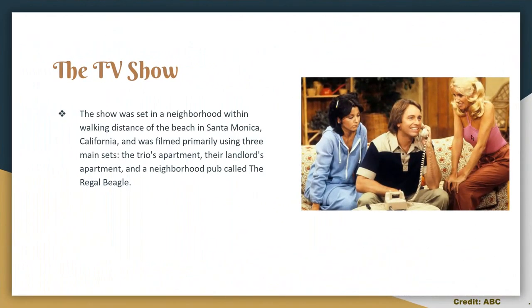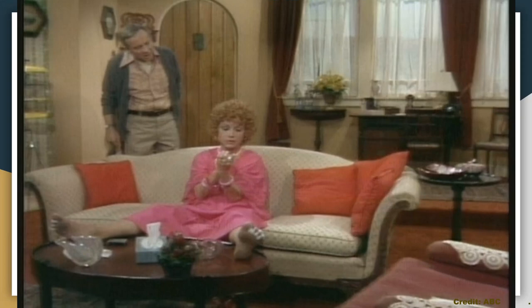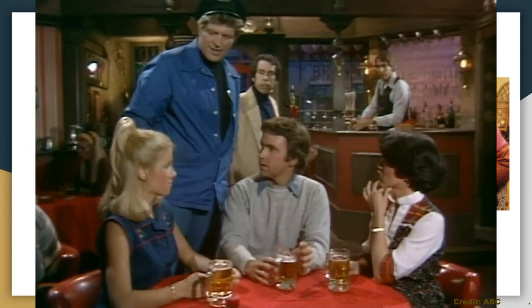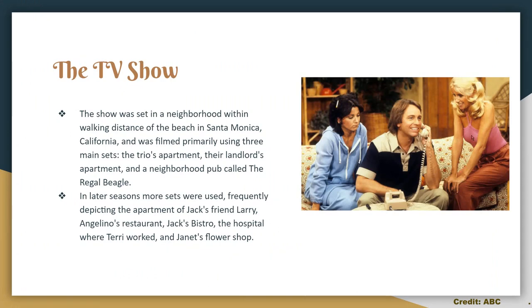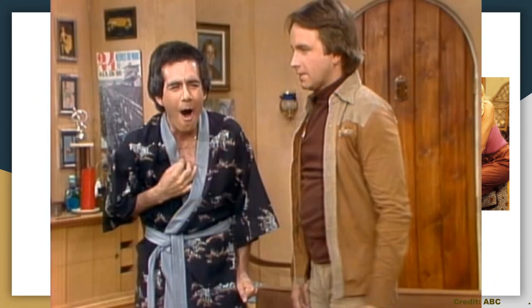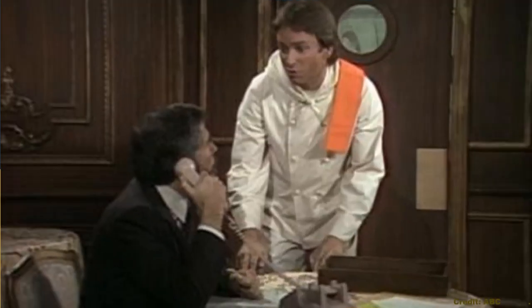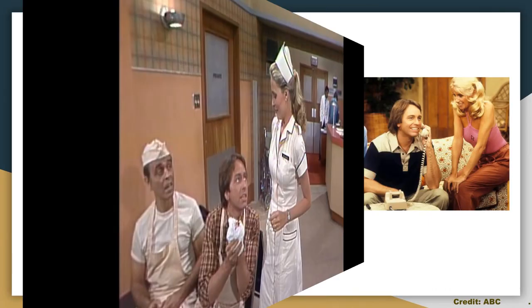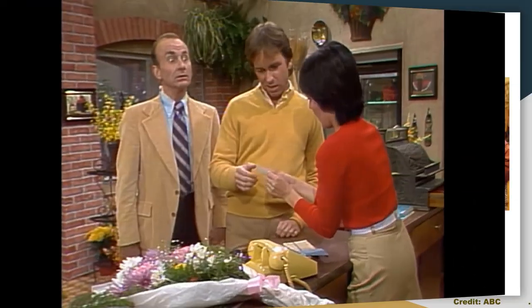The TV show was set in a neighborhood within walking distance of the beach in Santa Monica, California, and was filmed primarily using three main sets: the trio's apartment, their landlord's apartment, and a neighborhood pub called the Regal Beagle. In later seasons, more sets were used, frequently depicting the apartment of Jack's friend Larry, Angelino's restaurant, Jack's bistro, the hospital where Terry worked, and Janet's flower shop.